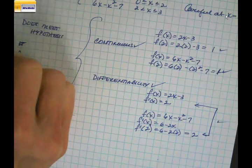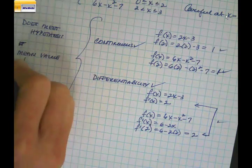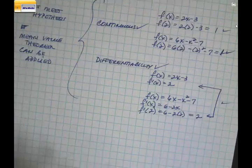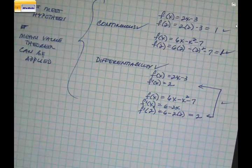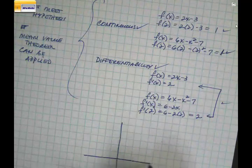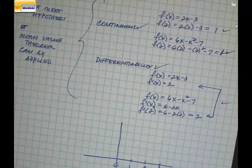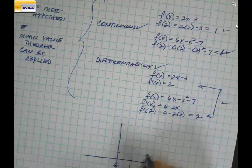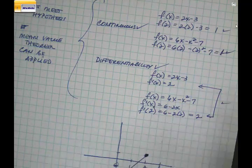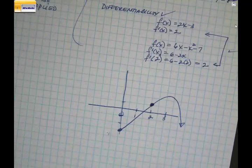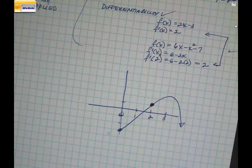Now check differentiability. The first function is 2x minus 3, so its first derivative is 2 — a constant slope. The second function is 6x minus x squared minus 7, so its first derivative is 6 minus 2x. At x equals 2: 6 minus 2 times 2 equals 6 minus 4 equals 2. Both first derivatives equal 2 at x equals 2 — so we are differentiable. This function does meet the hypothesis of the Mean Value Theorem. The Mean Value Theorem can be applied.